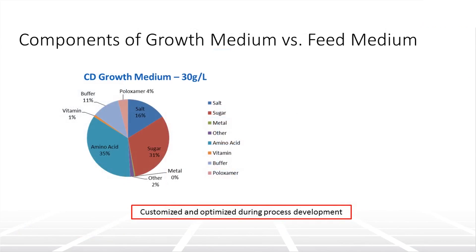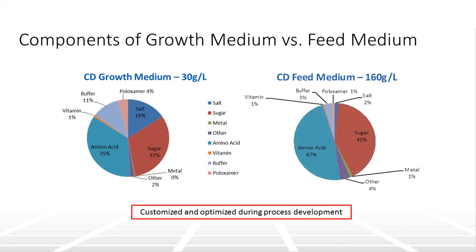As seen here, there are two types of media used during production, requiring different concentrations of media components. The growth media is designed to increase biomass during the cell expansion phase. Throughout production, the cells utilize nutrients, and these must be replenished by feeding new media into the bioreactor to ensure higher biomass and product yield.